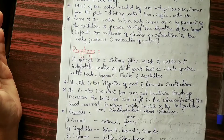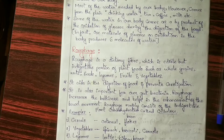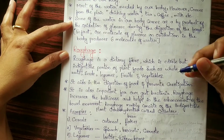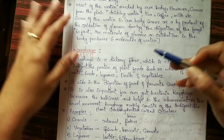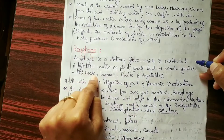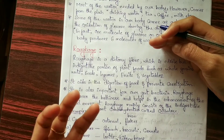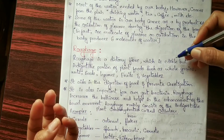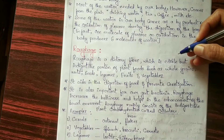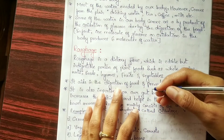Now we will move on to the next component of food: roughage. Roughage is very important and must be present in our diet — it is very essential for proper digestion and proper metabolic function. Roughage is a dietary fiber — it is the edible but indigestible portion of plant foods such as whole grains, nuts, seeds, legumes, fruits, and vegetables. Those plant foods form the roughage.